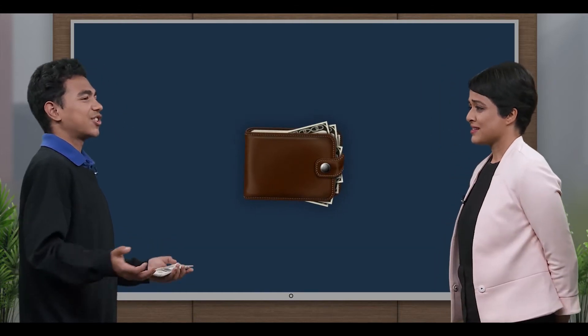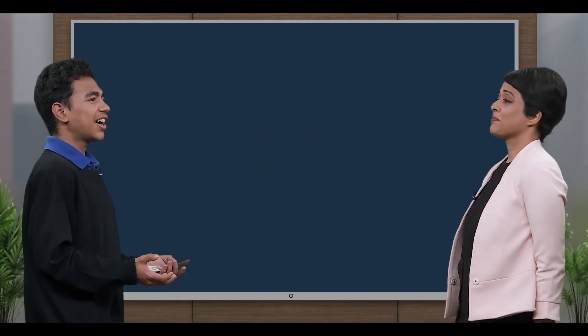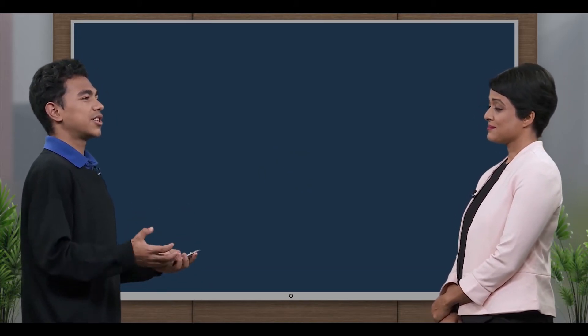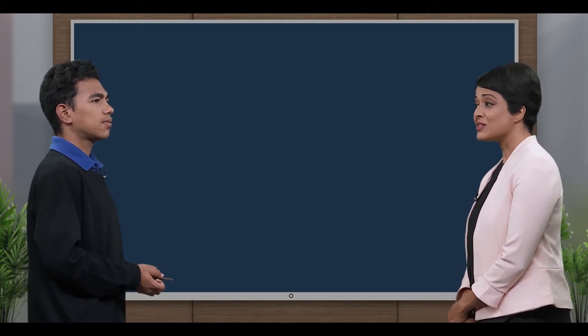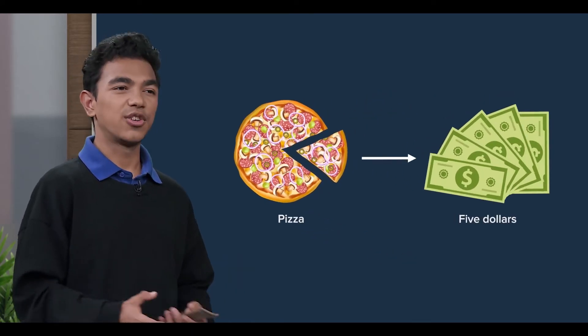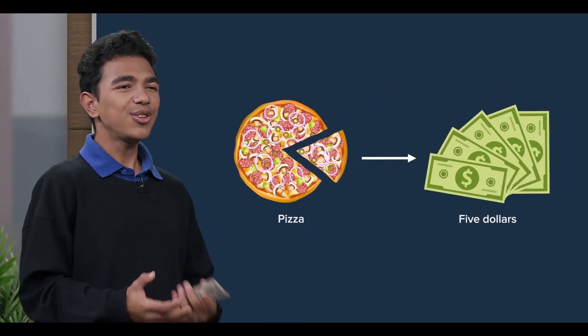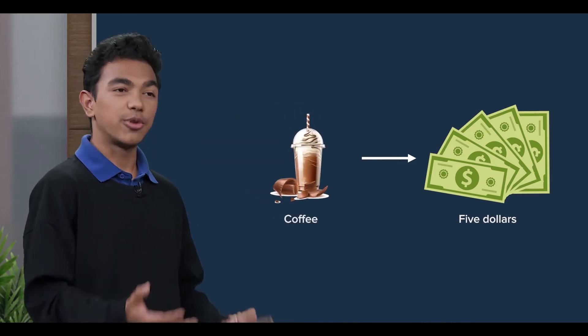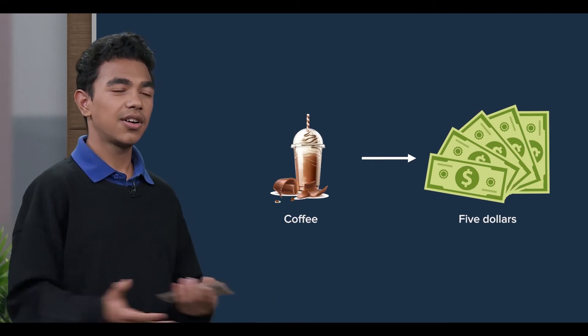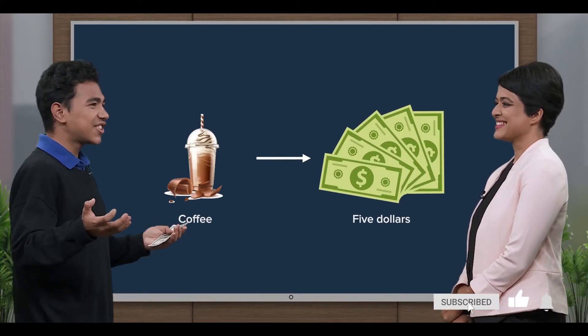Wow, somebody's loaded! I'm not, actually, and that's the problem. All I have is five dollars, but there are so many things that I want to buy today. Well, I'm hungry, so I'm planning to have a couple of slices of pizza — that would cost me five dollars. But I also feel like enjoying a Starbucks frappuccino, and that would also cost me five dollars. See my dilemma?